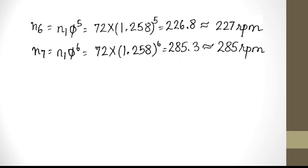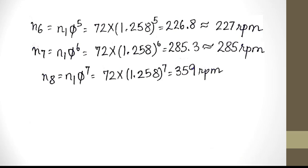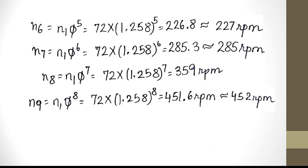n6 = n1 × φ⁵ = 72 × 1.258⁵ = 226.8, rounded to 227 rpm. n7 = n1 × φ⁶ = 72 × 1.258⁶ = 285.3, rounded to 285 rpm. n8 = n1 × φ⁷ = 72 × 1.258⁷ = 359 rpm.